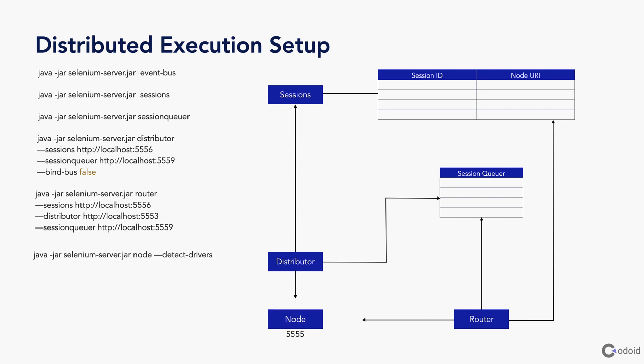Finally, a node is created. Once the node is created, the distributor sends the node information to sessions. The distributor sends the node URI to sessions, and sessions updates the node URI in the sessions map. Now the distributed execution is set up. I will explain how it works — I will simulate and show you how a session is created and how a command gets executed in the distributed execution setup.